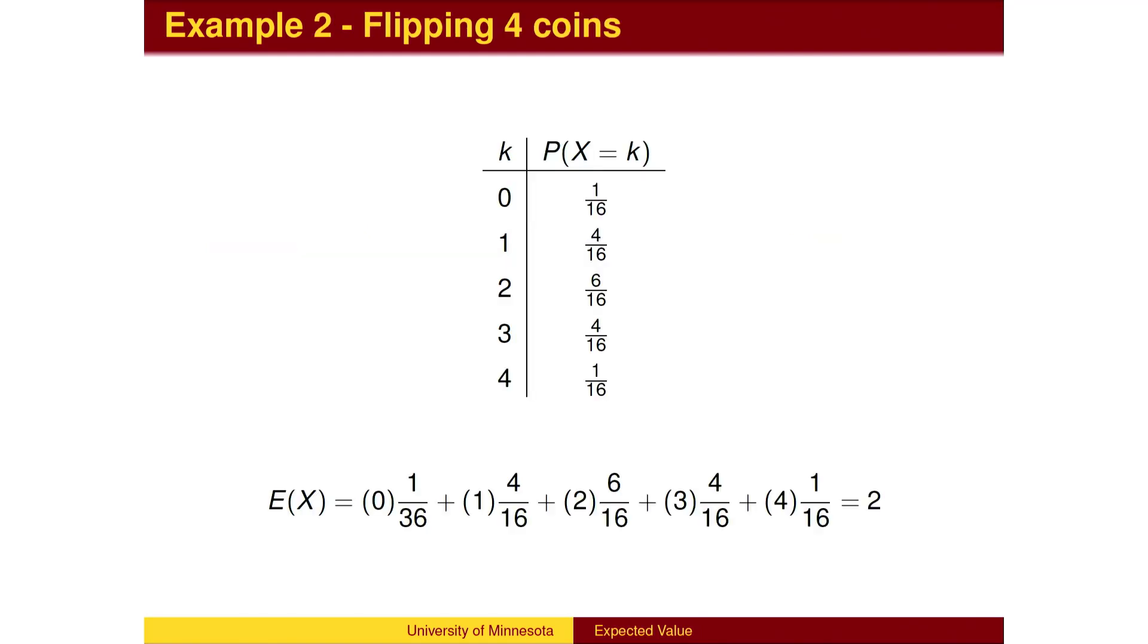Here's a second example: flipping four coins. We find the probability of getting 0, 1, 2, 3, or 4 heads on the four flips. Then multiply value times probability and find the sum.